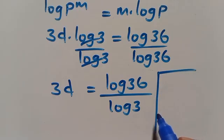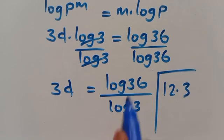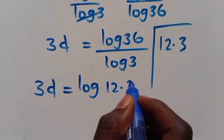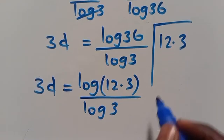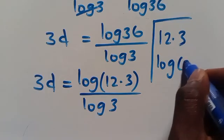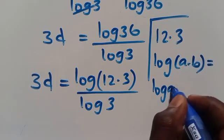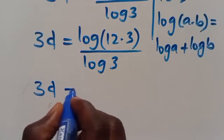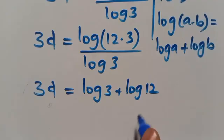From here we can write 36 as the product of 12 times 3. Substituting, we get 3D equals log of (12 times 3) divided by log 3. Recalling that log(a times b) equals log a plus log b, we apply the product law to get 3D equals log 3 plus log 12, all divided by log 3.